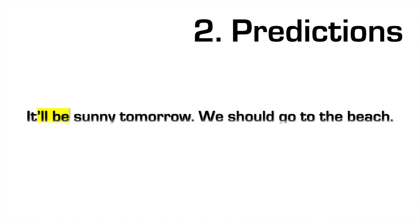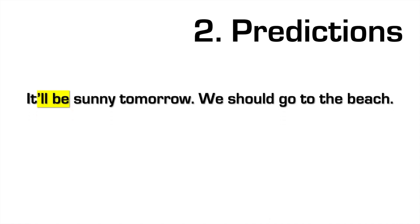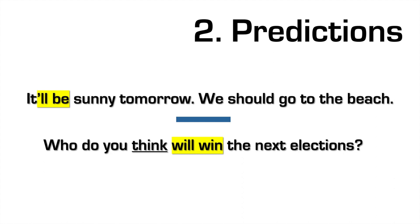So let's take a look at number two now: predictions. It'll be sunny tomorrow, we should go to the beach. You look at the forecast and you predict that tomorrow will be sunny, so you use will. Another example: Who do you think will win the next elections? Again we use think with will — it's also a prediction, because you're asking who will win the next elections.